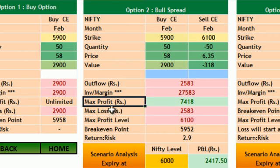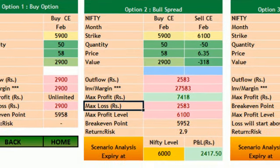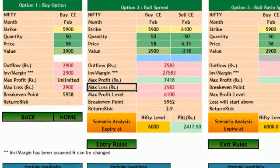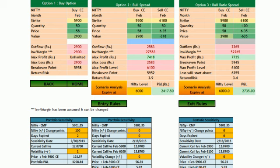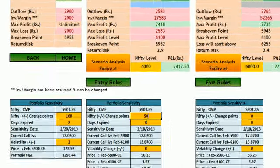The max profit levels and the max loss which can be incurred in this particular strategy will be shown. We will also be given a breakeven point — that is the point above which the profit will start. We will also be displayed our return-to-risk ratio for this particular trade. So all in all, you can get everything in one screen.